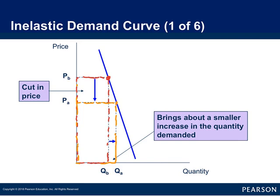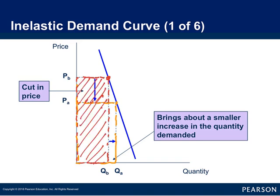We can follow the same line of thought looking at an inelastic demand curve, and remember most agricultural products are inelastic in nature. The question you would have to ask yourself if you are the producer: would you prefer to have the price at P-B or the price at P-A? The red rectangle indicates producer revenue, and the orange rectangle indicates producer revenue when the price has dropped on an inelastic product.